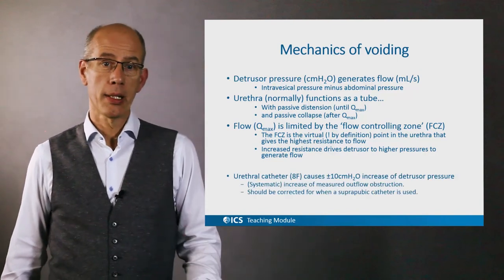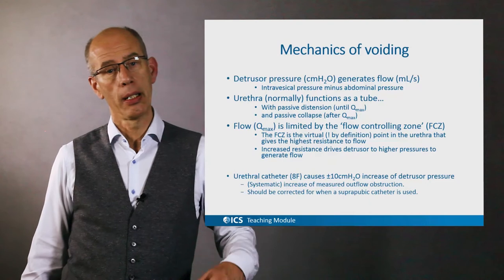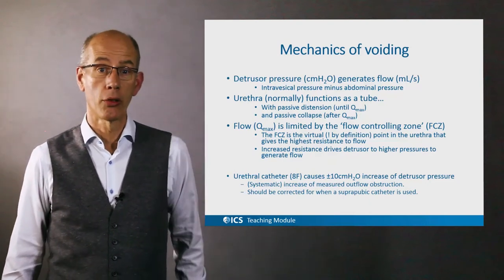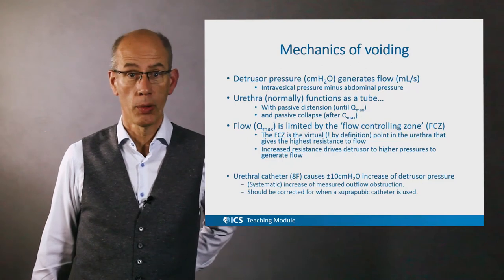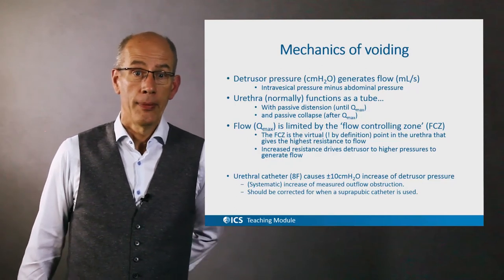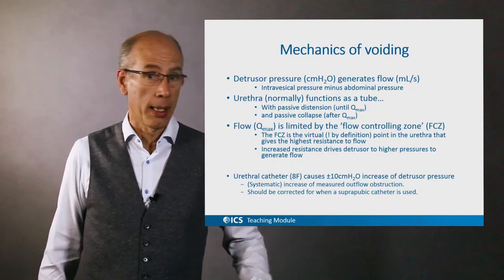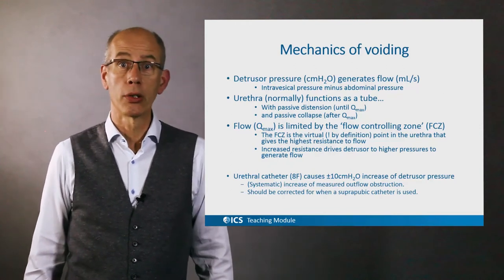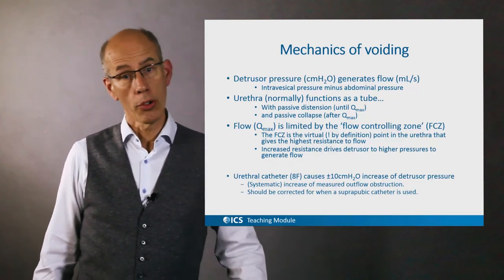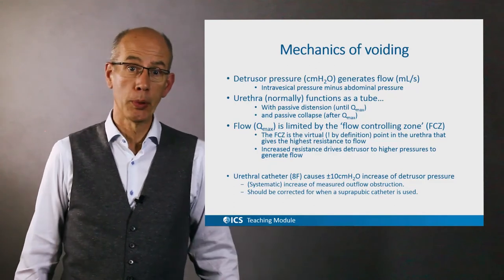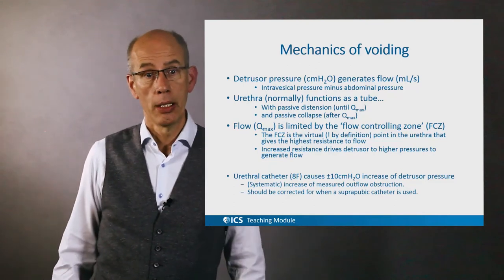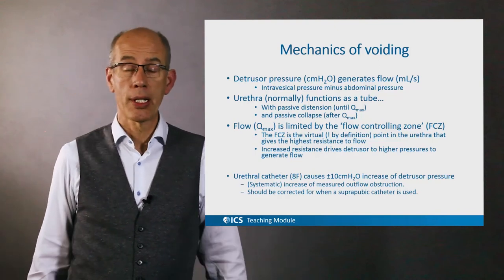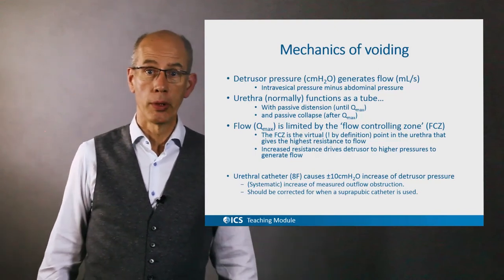The urethral catheter itself, when it is 8 French, causes a systematic resistance of about 10 centimeters of water, and this is standard in all urodynamics done with transurethral catheters. However, when a suprapubic catheter is used for urodynamics, the measurement should be corrected to calibrate for the standard pressure values we use.